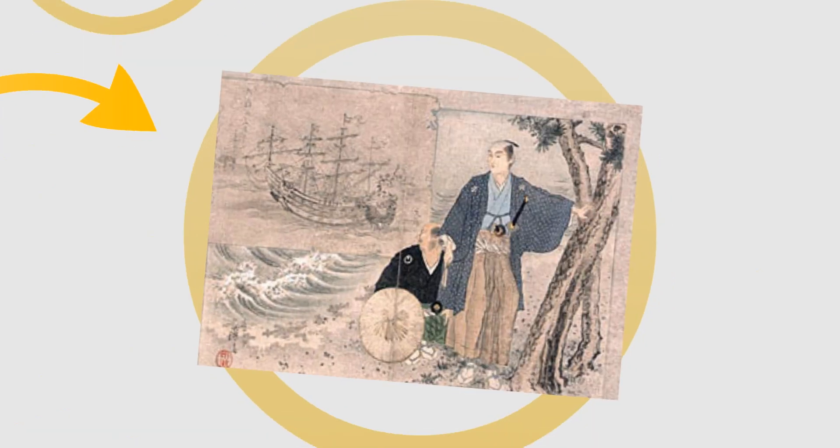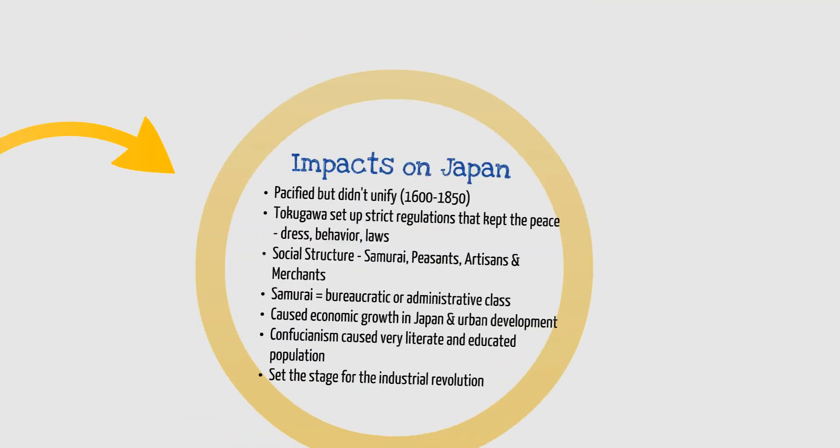Now, looking at this picture — as shipbuilding obviously declined, once we get into the 1800s, ships are going to really change things. We're going to talk about Matthew Perry and how he, years and years forward from where we are right now, is going to force open Japan to trade, which is a really unique thing that's going to happen. But that's on the horizon. This picture just kind of exemplifies that.